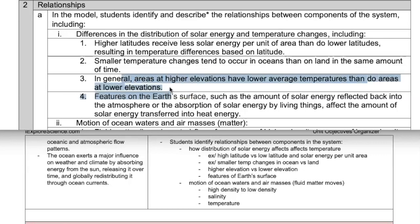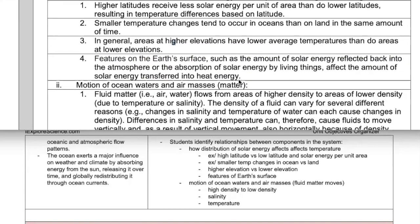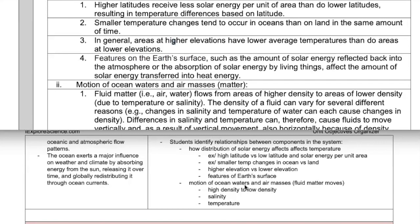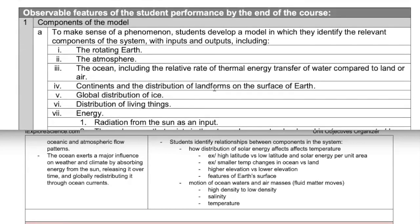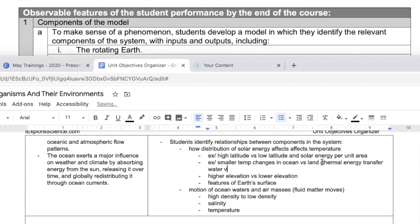Smaller temperature changes in the ocean. This is another exploration we're going to have to do. In general areas at higher elevations. So the impact of elevation on the distribution of solar energy and temperature changes. So you can see I'm just kind of simplifying what's in here so that I'm identifying the content I'm teaching. I'm going to be teaching about latitude and the solar energy input. I'm going to be teaching about the temperature changes in the ocean versus land and as an extension of that why that happens. So that kind of ties into up here the thermal energy transfer of water. So I might add thermal energy transfer water versus land.